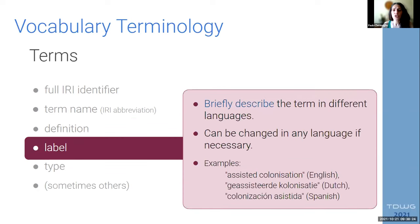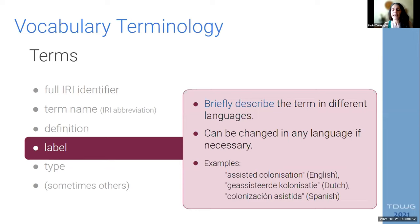Aside from the definition, terms have labels. Labels are pieces that try to briefly describe the term in different languages. For example, we have three examples in three different languages — this is 'assistive colonization.' You can see that a person can read it easily; it's short and tells you what the term is about. Labels can be added in any language and changed without having to follow a very complex process.